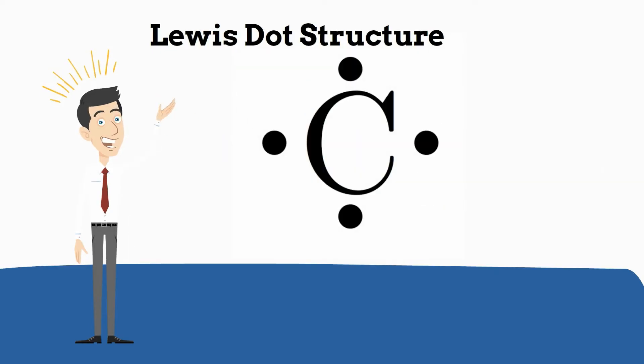So, if you look at carbon, you will notice that the Lewis dot structure looks like this, and these dots represent the electrons in the outer shell.